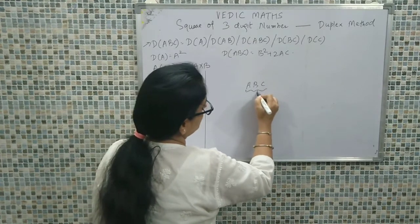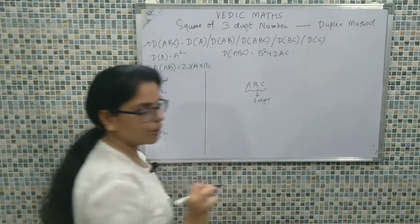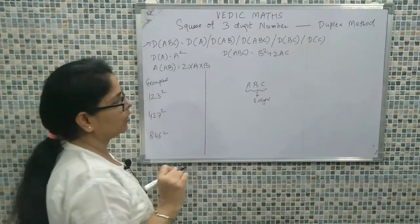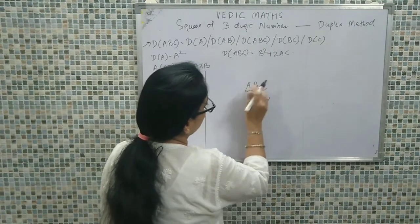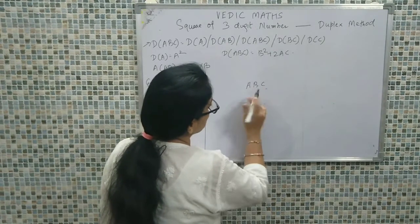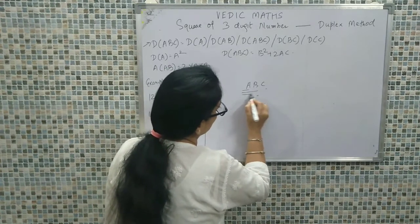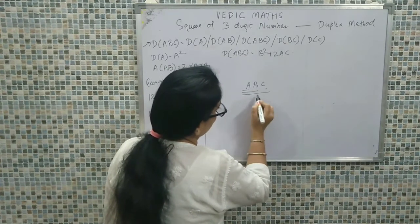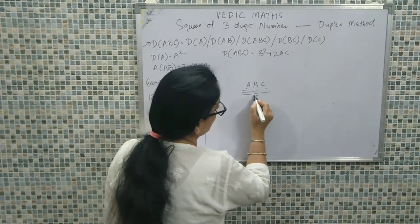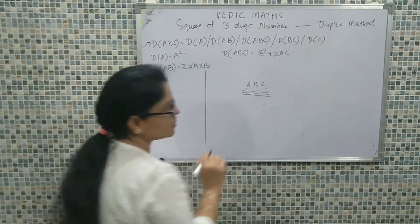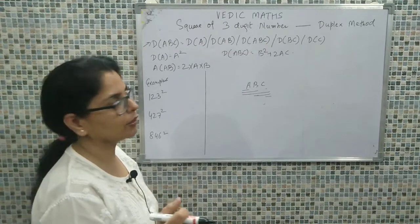ABC is basically a three-digit value whose square we need to calculate. We proceed by first calculating duplex of A, then AB, then ABC — once we have reached ABC, we then do BC and C. We have to calculate the duplex using this logic.